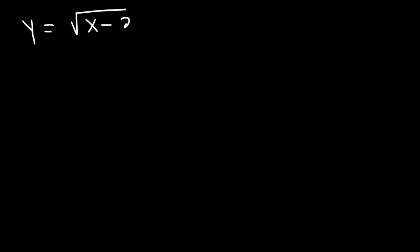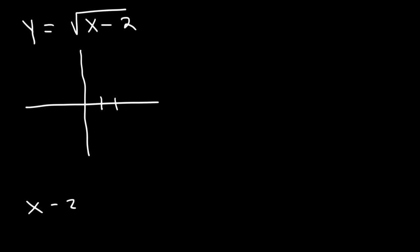If we have the square root of x minus 2, this graph is going to shift two units to the right. If you set the inside equal to 0, x equals 2 — that's the new origin at 2 comma 0. Since there's a positive sign in front of x and in front of y, it will go towards quadrant 1.